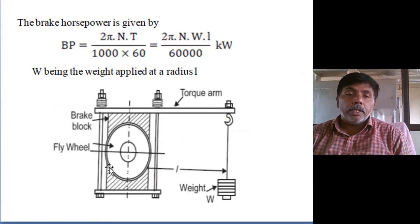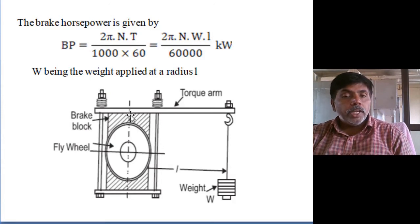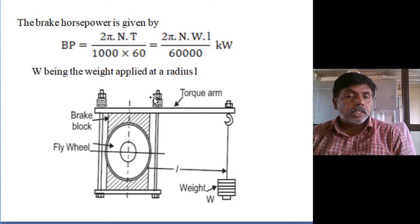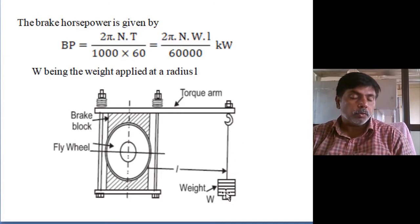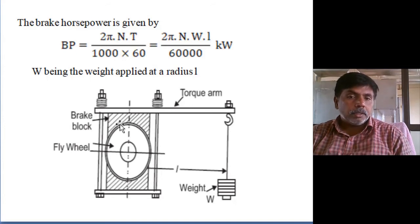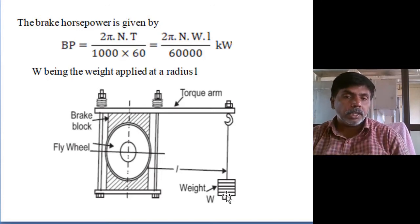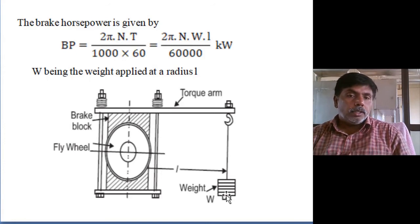In the prony brake dynamometer, the flywheel is connected to the crankshaft. The flywheel rotation is held by wooden blocks tightly joined by spring tension and bolt-and-nut joints. The torque arm has one end connected to a counterweight by rope. To measure the power developed by the crankshaft, we stop the flywheel rotation; how much weight is required to stop it at a particular instant is what we measure, then immediately release the weights, otherwise the engine will stop.